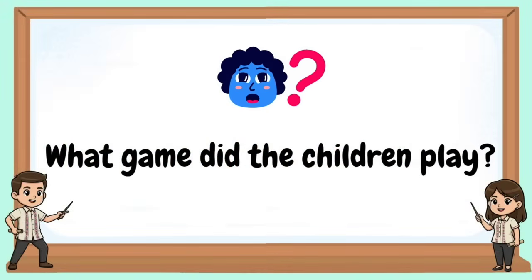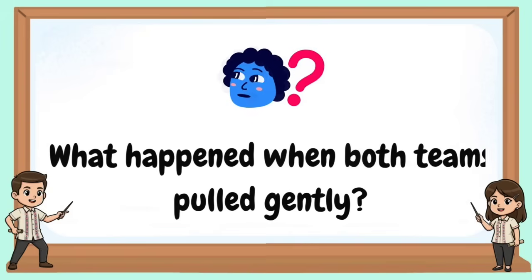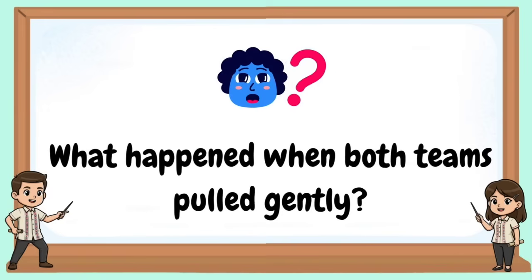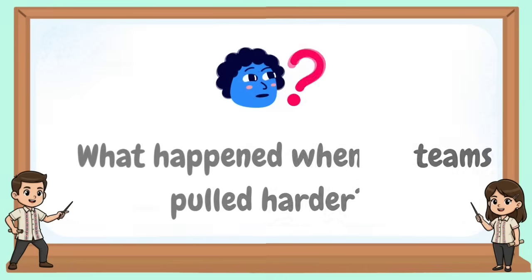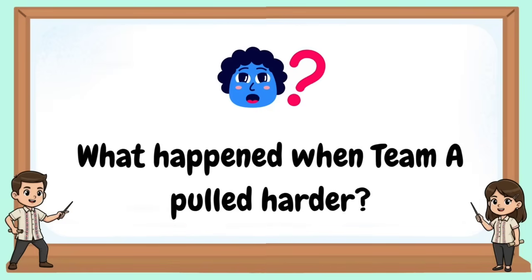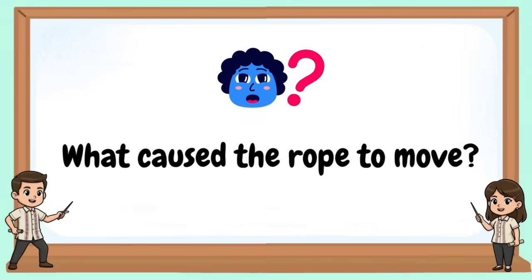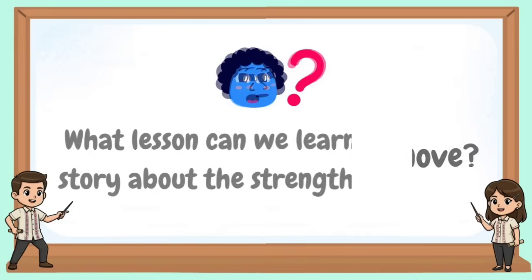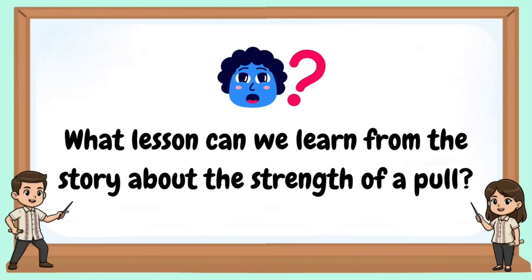What game did the children play? What happened when both teams pulled gently? What happened when Team A pulled harder? What caused the rope to move? What lesson can we learn from the story about the strength of a pull?